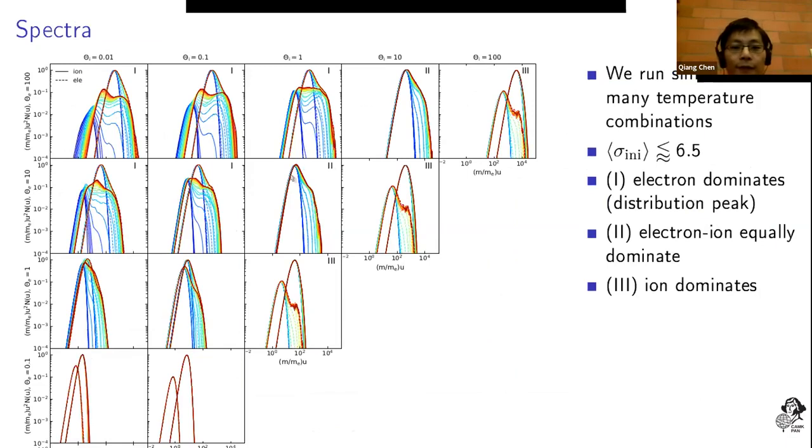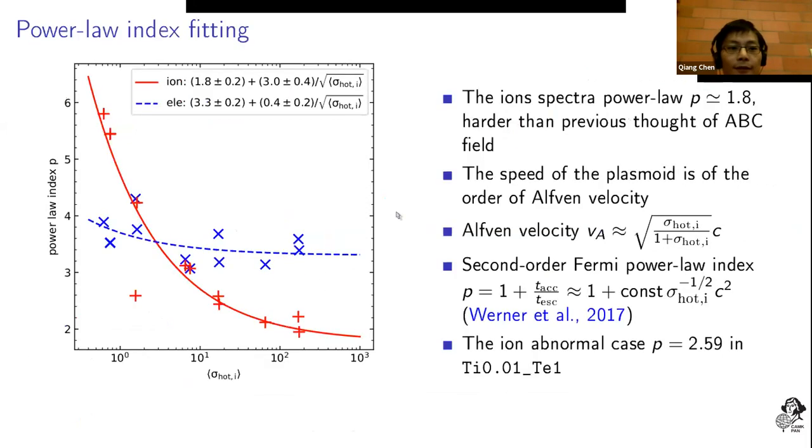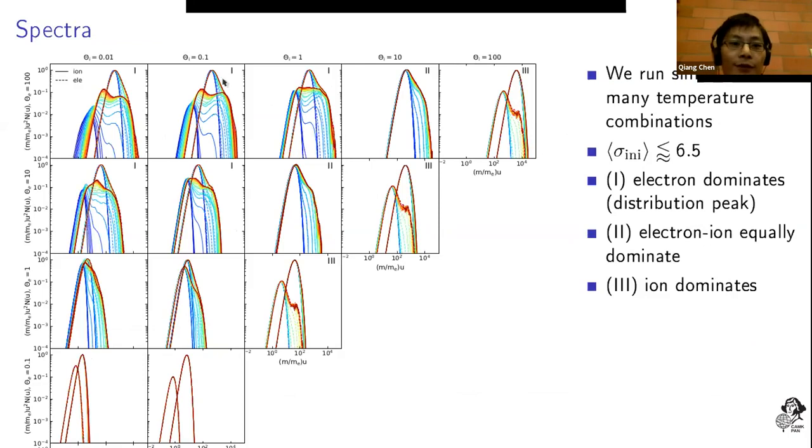Because there are a lot of different spectra, we separated them into three different types. Type one means the peak of the distributions is dominated by the electrons. Type two means the electron and ion are equally dominant in the peaks. For type three, the ion is dominated.